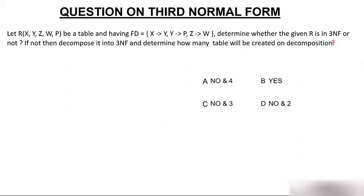In order to solve such questions you need to identify what is the candidate key, and how we find the candidate key using an arrow diagram. We have: X to Y, Y to P, and Z to W. Now you have to determine which attributes are not having any arrow pointing towards them. X does not have an arrow and Z does not have an arrow, so X and Z will be the integral part of the candidate key.